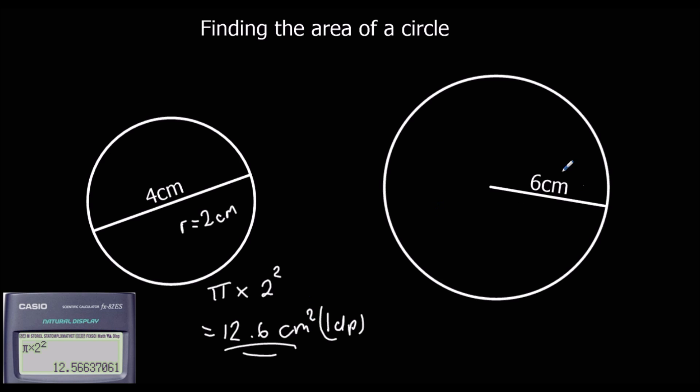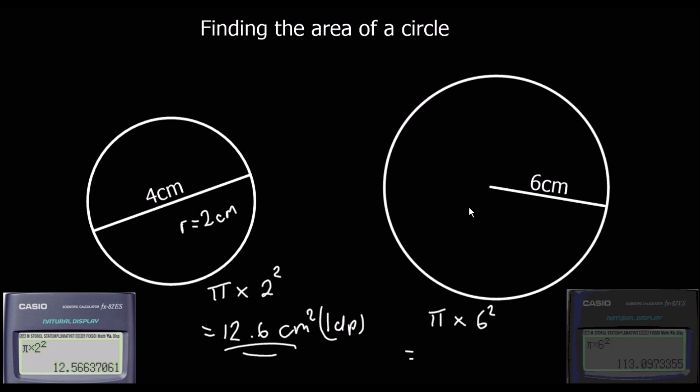And here we've got a 6 centimeter radius, so it's pi times 6 squared. Then we type that in the calculator, and we get 113.1 centimeters squared, again, to one decimal place.